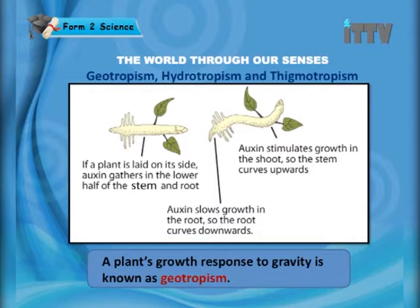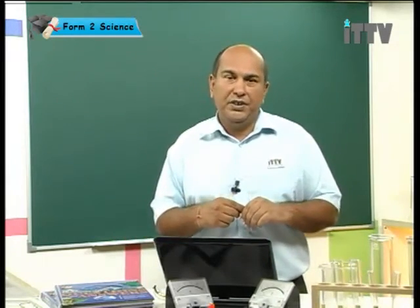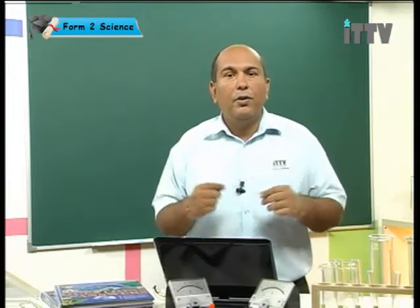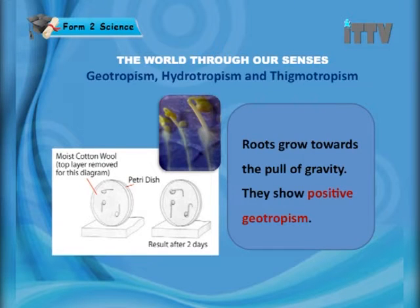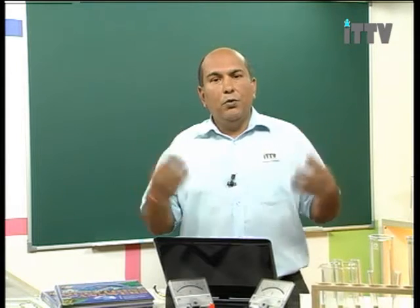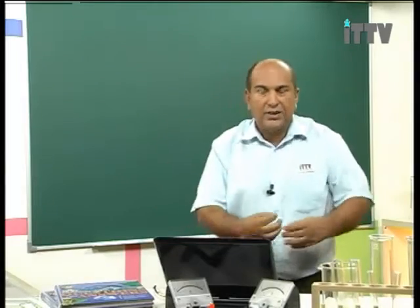A plant's growth response to gravity is known as geotropism. Geotropism is the growth of the root towards the stimulus of gravity. Roots grow towards the pull of gravity — they show positive geotropism. So the root grows downwards, moving towards gravity, which is pulling us into the centre of the earth.